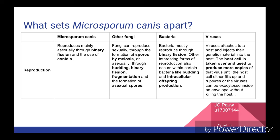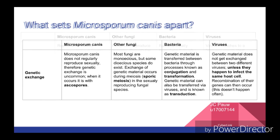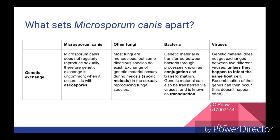Bacteria also mainly reproduce by binary fission, but other less common methods also exist, like budding and intracellular offspring production. Viruses have to infect the host and inject the viral genome into the host to force the host to produce more copies of the virus. When looking at genetic exchange, Microsporum canis does not regularly reproduce sexually; therefore, genetic exchange is uncommon, but when it does occur, it occurs through the formation of asexual spores. Most fungi are monoecious, but some dioecious species do exist. Exchange of genetic material occurs during sporic meiosis in sexually reproducing fungi. Bacteria can exchange genetic material through processes known as conjugation and transformation. Genetic material can also be transferred via viruses in a process known as transduction.